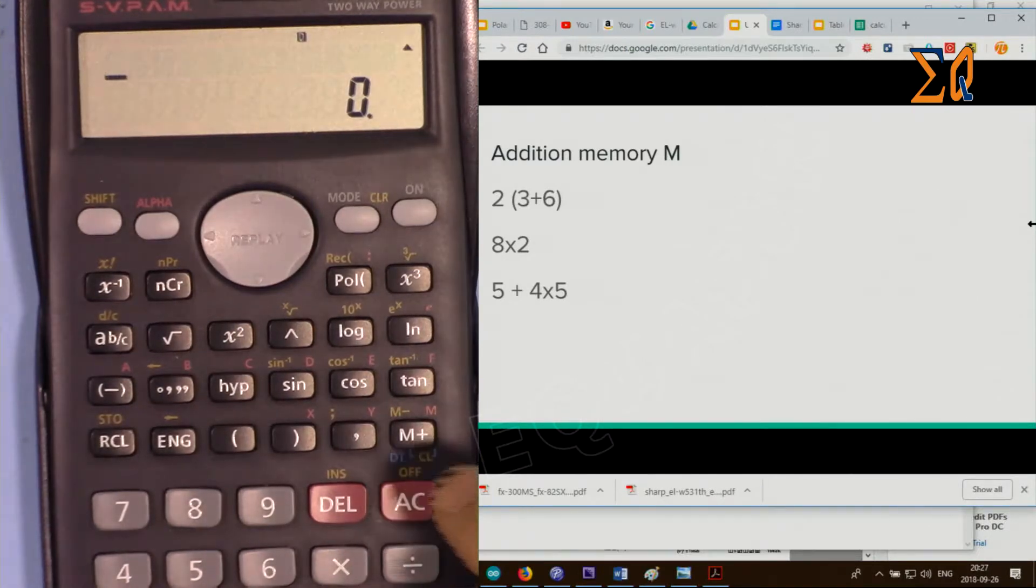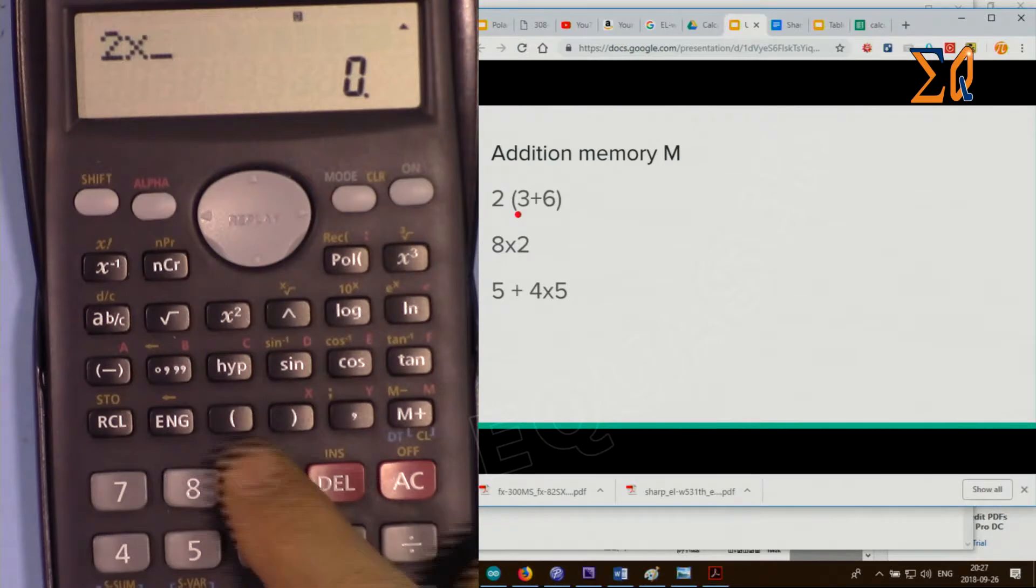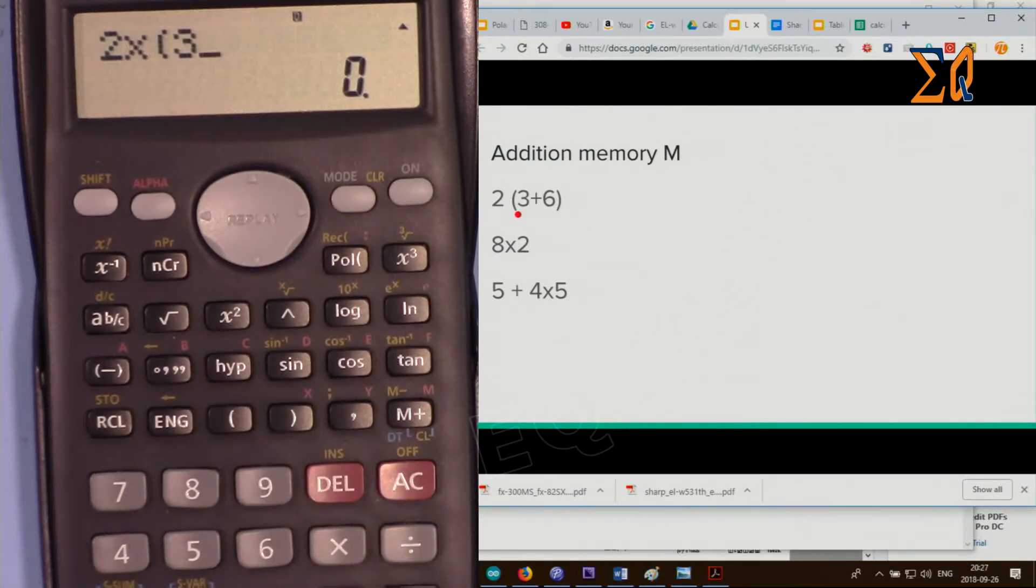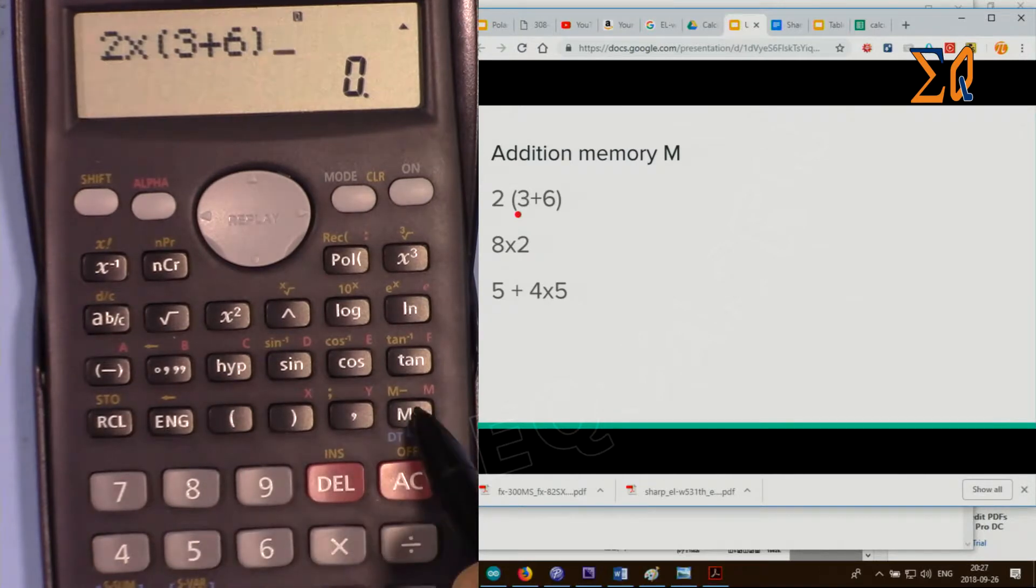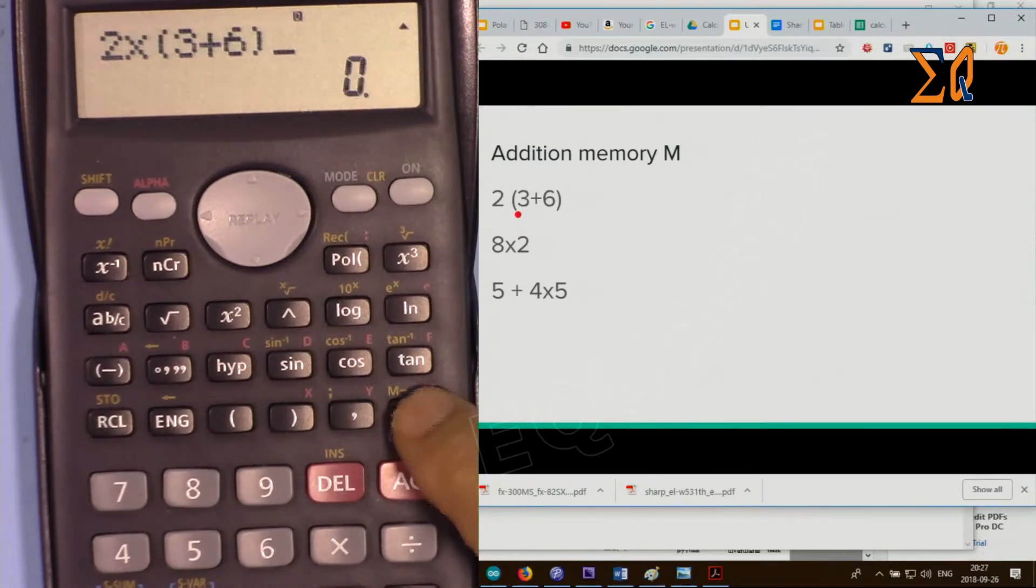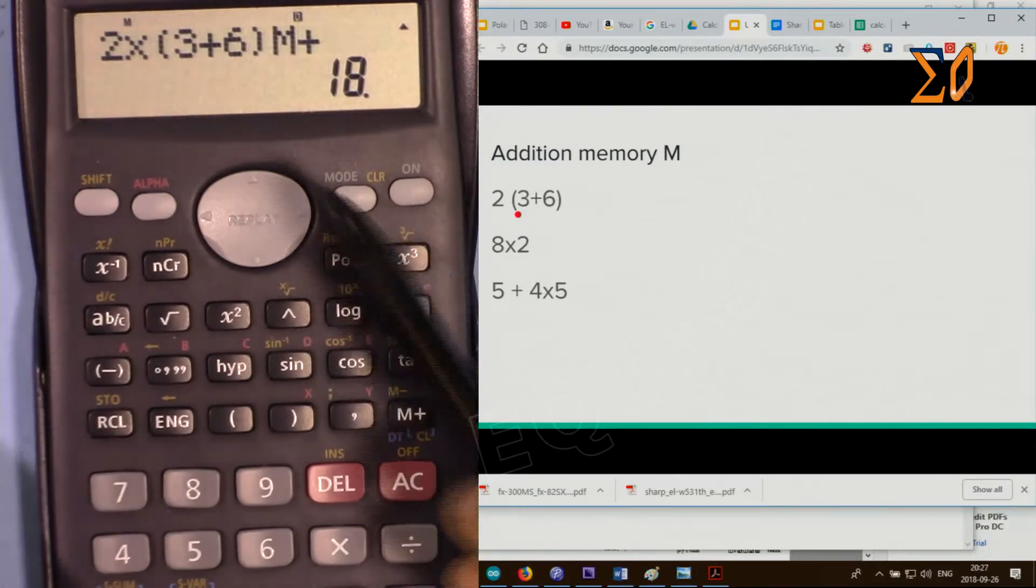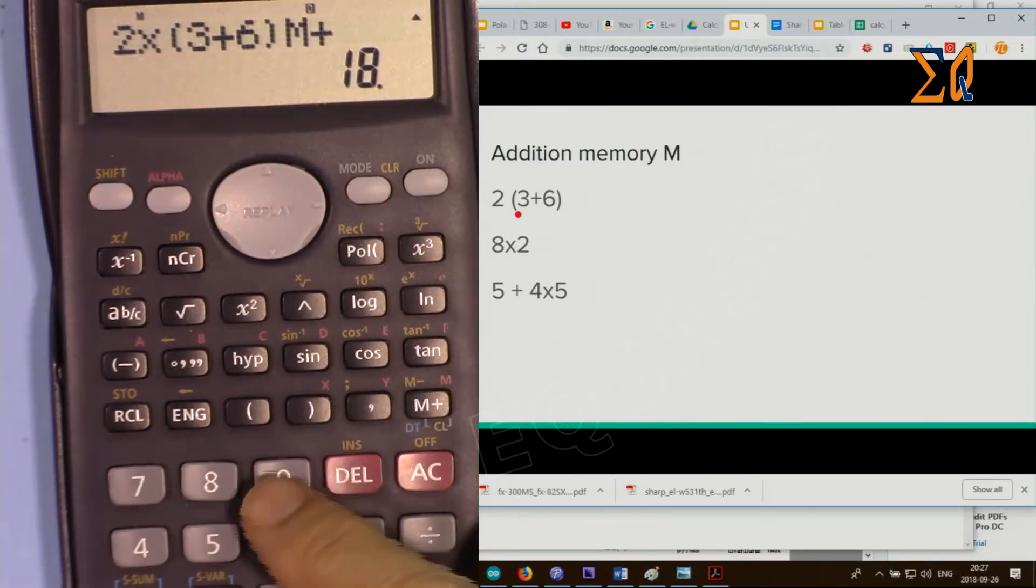Now let's do this calculation: 2 times 3 plus 6. Now press M plus. Pay attention when I press it, you'll see an M here. So that tiny M shows that we have a value. Now if I do the next value, 8 times 2.